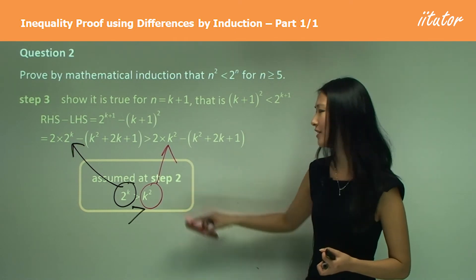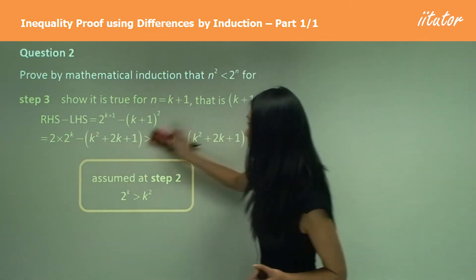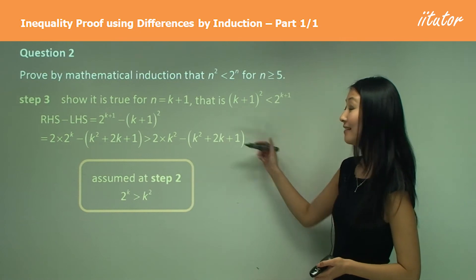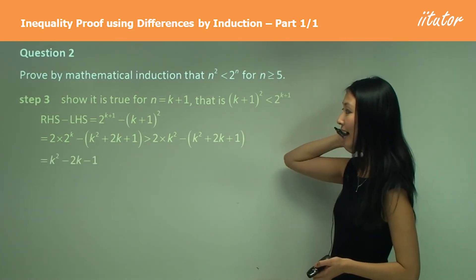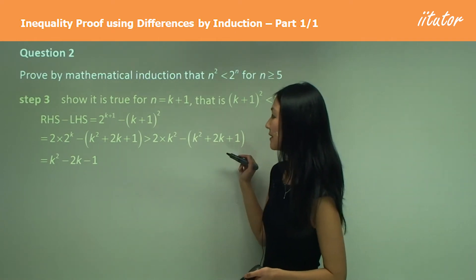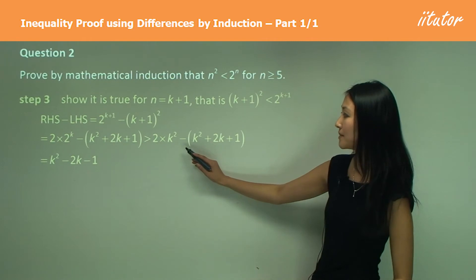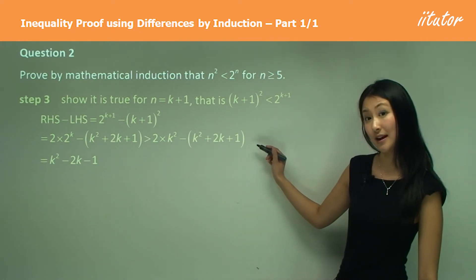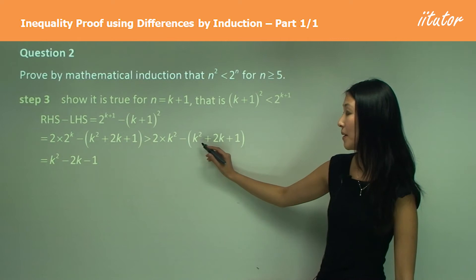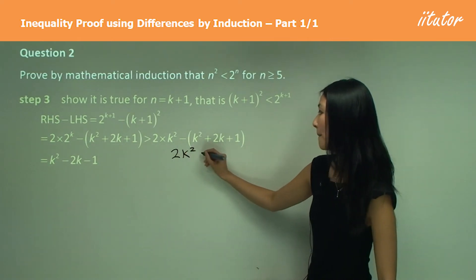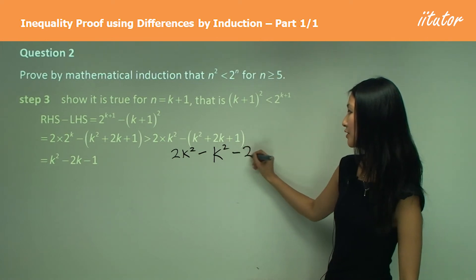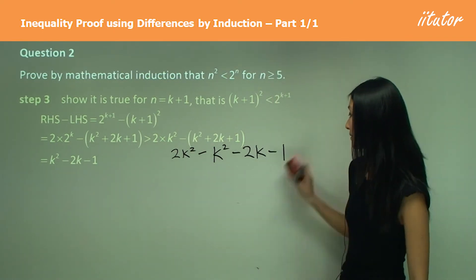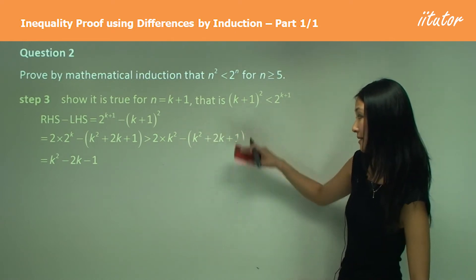If we've only changed one thing and that one thing is the lesser value of k squared, then this side must be less than the other side. Using the assumption, we now simplify: we have 2 times k squared minus k squared minus 2k minus 1, which gives us k squared minus 2k minus 1.